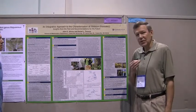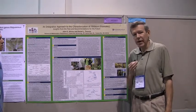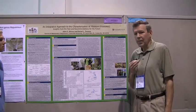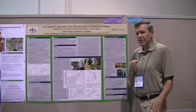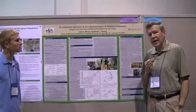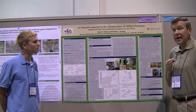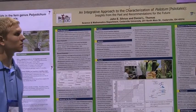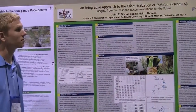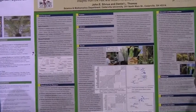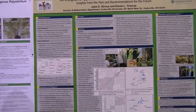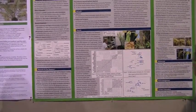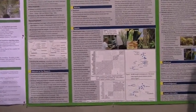We were fortunate to acquire a data set — a character matrix — from the lab of Schneider, Smith, and Pryor. It's a large character matrix which describes many of the different traits of Psilotum and the possible related plant groups. This 135-character matrix, along with 35 genera, represents a range from seed plants to mosses to lycopods to the horsetails.